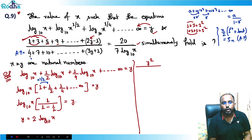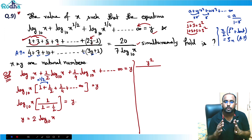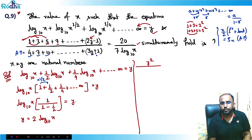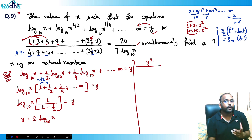The terms 4, 7, 10, ... are in the form 3y + 1. With y terms in this AP, the first term is 4 and the last term is 3y + 1. So the AP sum becomes: (y/2) × (first term + last term) = (y/2) × (4 + 3y + 1) = (y/2) × (3y + 5).